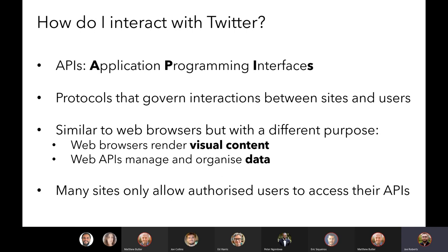An API is not that dissimilar to a web browser, but it has a different purpose. With a web browser, it's all about rendering visual content — typically HTML. An API is all about managing and organizing the underlying data that goes towards generating that visual content, and allows you to access that data in a relatively straightforward manner.